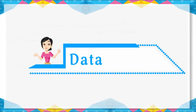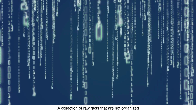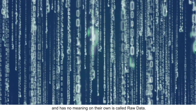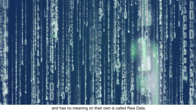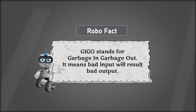Data: A collection of raw facts that are not organized and have no meaning on their own is called raw data. Robo fact — G.I.G.O. stands for 'Garbage In, Garbage Out,' meaning bad input will give bad results.